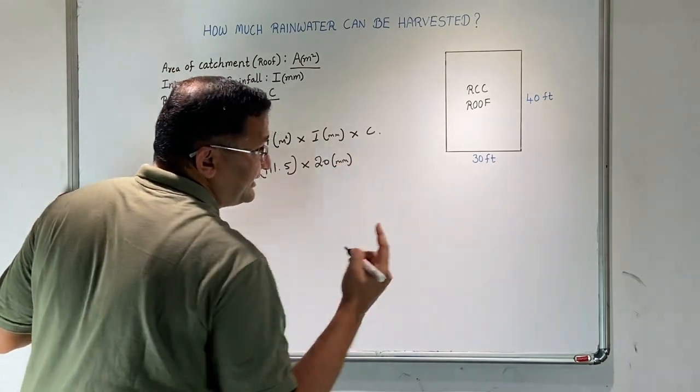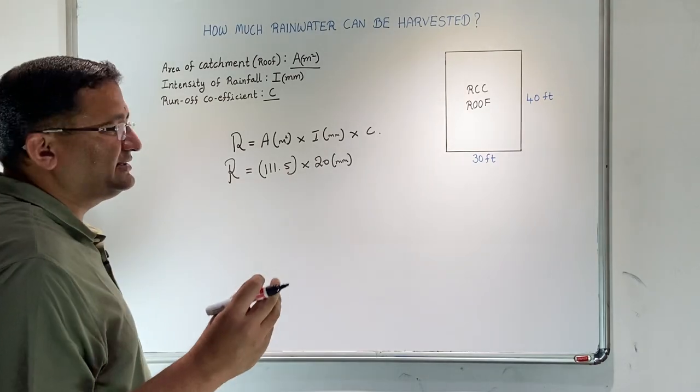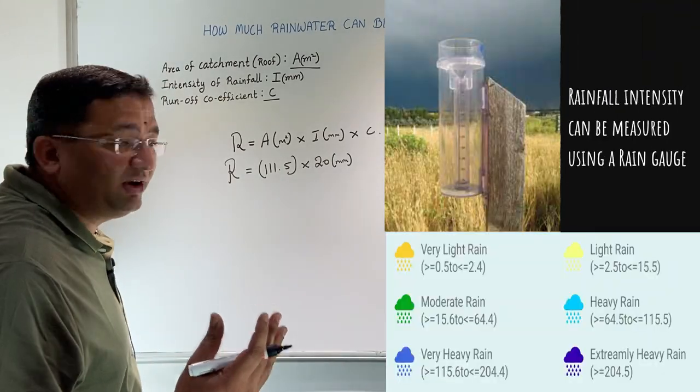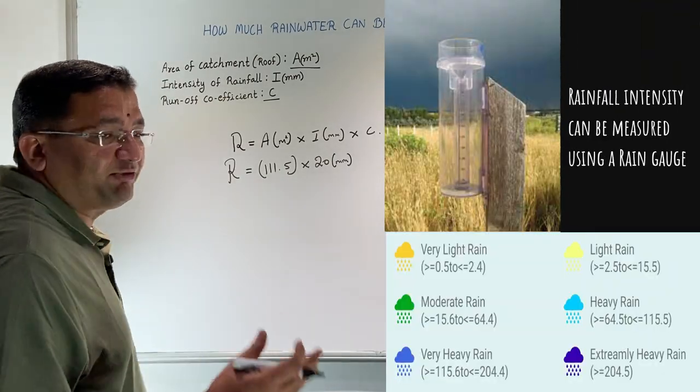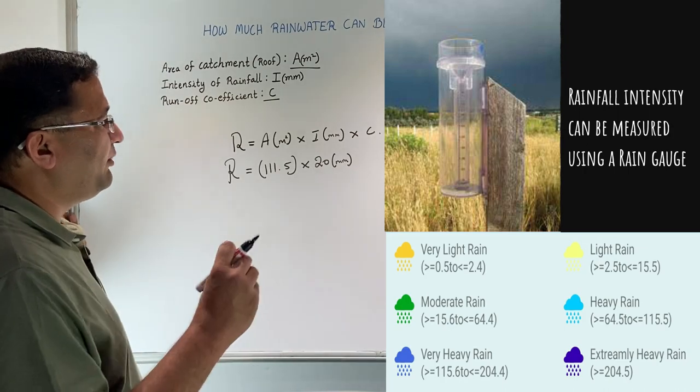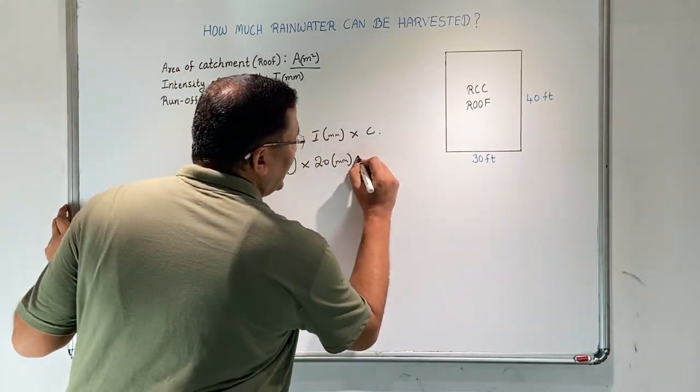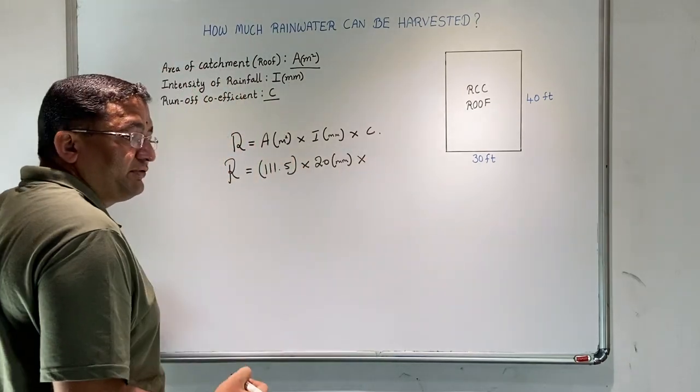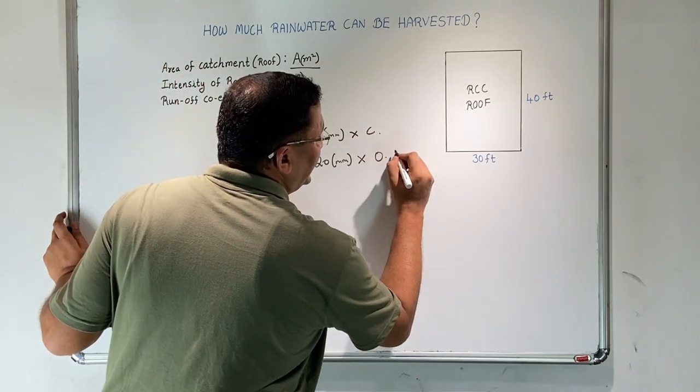20 mm is not a very heavy rainfall, but at the same time, it is not mild rainfall. We can say a slightly moderate to heavy rainfall is 20 mm. For RCC, we will take a runoff coefficient of 0.85.